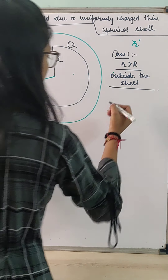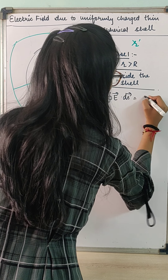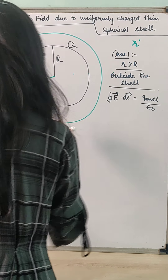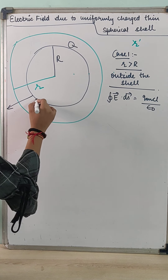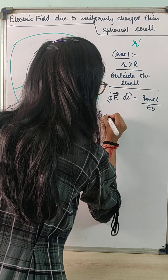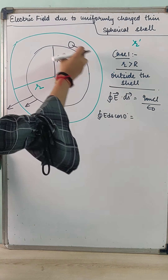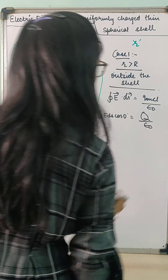By Gauss's theorem, E dot ds equals Q enclosed divided by epsilon naught. Since this is a positive charge, its electric field is directed radially outwards, and the area vector is also directed radially outwards. The angle between the two is 0 degrees, so it becomes E ds cos 0. The charge enclosed by the Gaussian surface is capital Q, giving us capital Q divided by epsilon naught.